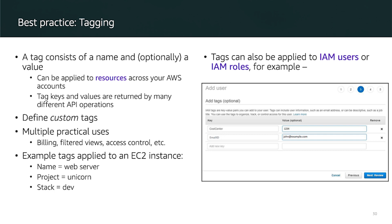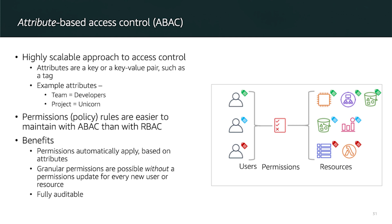Now let us look at attribute-based access control. Since we can tag resources, attribute-based access control lets you create general permission rules that scale with your organization. IAM users have attributes such as one or more tags, and resources also have attributes like matching tags. The policy checks to see if an attribute applied to an IAM user is also applied to the resource they want to access. When you create new IAM users and new account resources, you apply the correct tags to both.